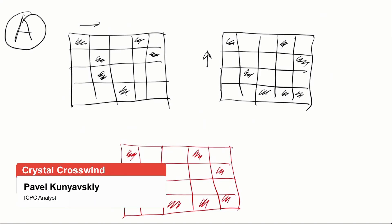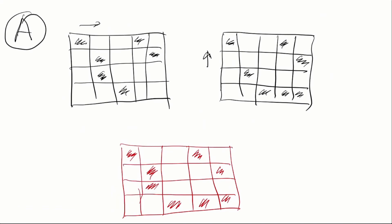Here is a solution for problem A, Crystal Crosswind. We have a grid of cells, some of which are colored, and we don't know that grid, but we have some partial information about it and want to restore the initial grid.